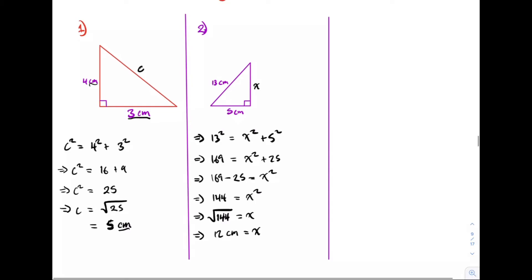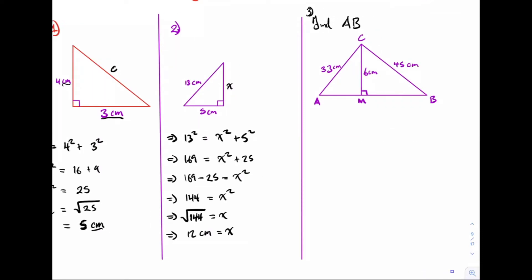Let's take a look at our final example. Our final example asks us to solve for AB in the following trigon. Here I'm going to demonstrate how we can use the formula without doing the entire process. In the triangle, AB is equal to AM plus MB. So we need to solve for AM separately and MB separately. Let's solve for AM. We can say that AM is equal to the square root of 33 squared minus 6 squared.